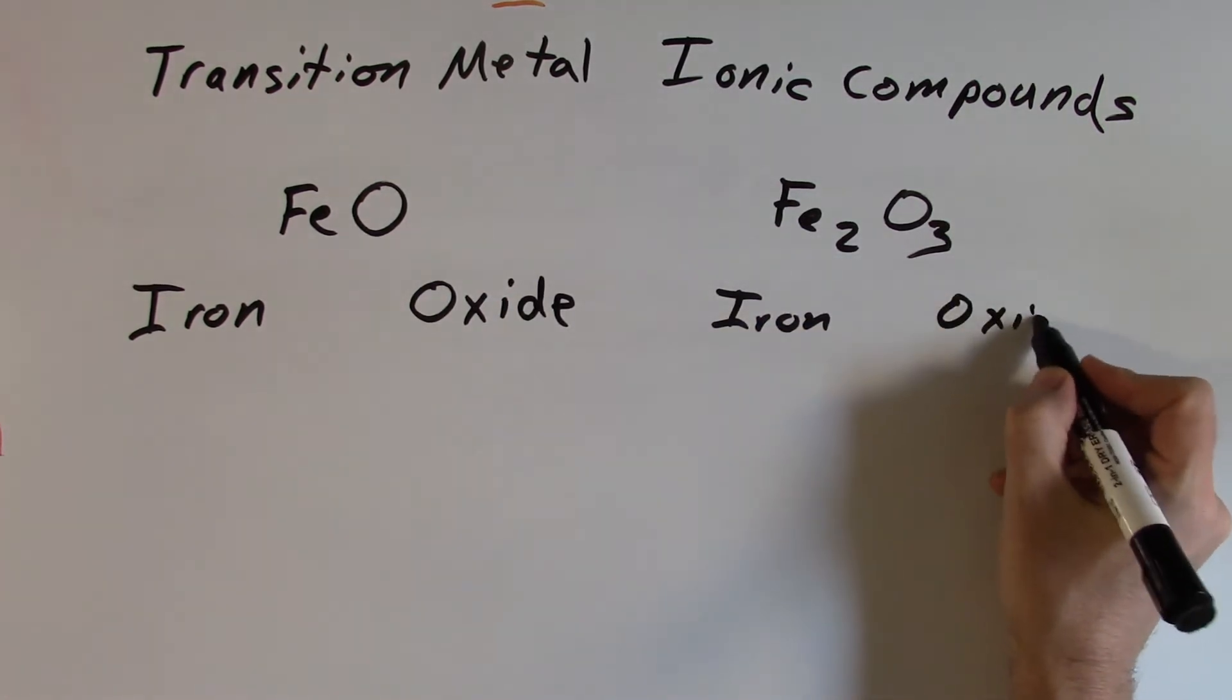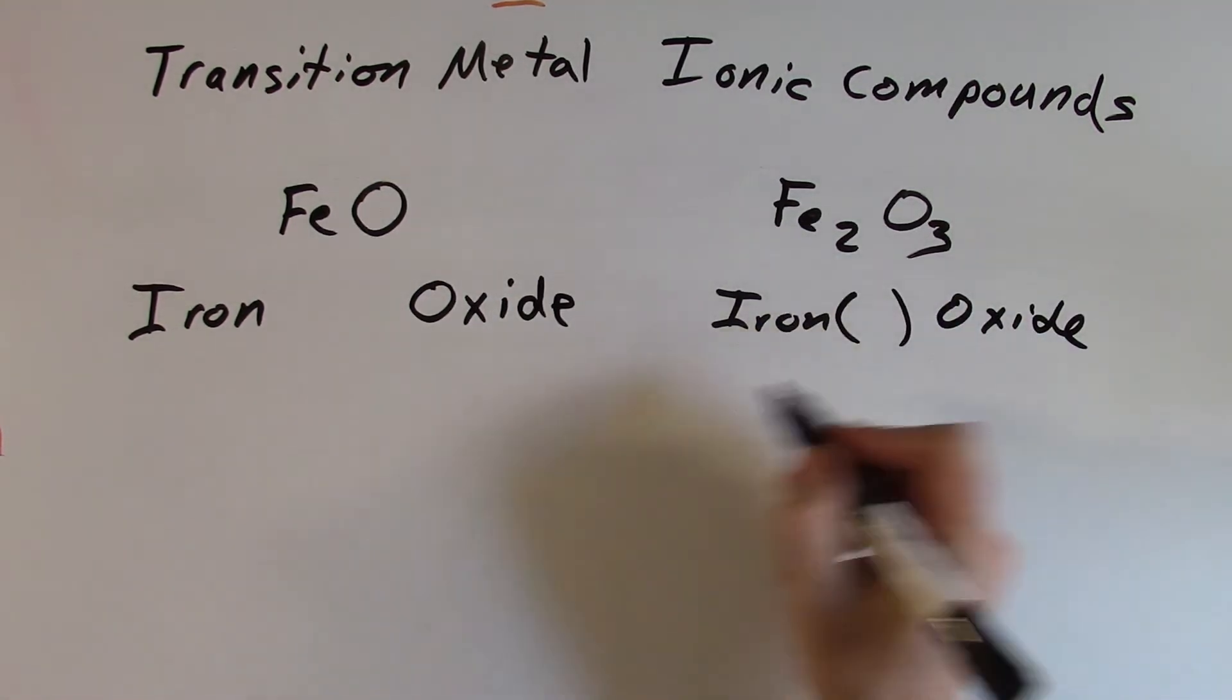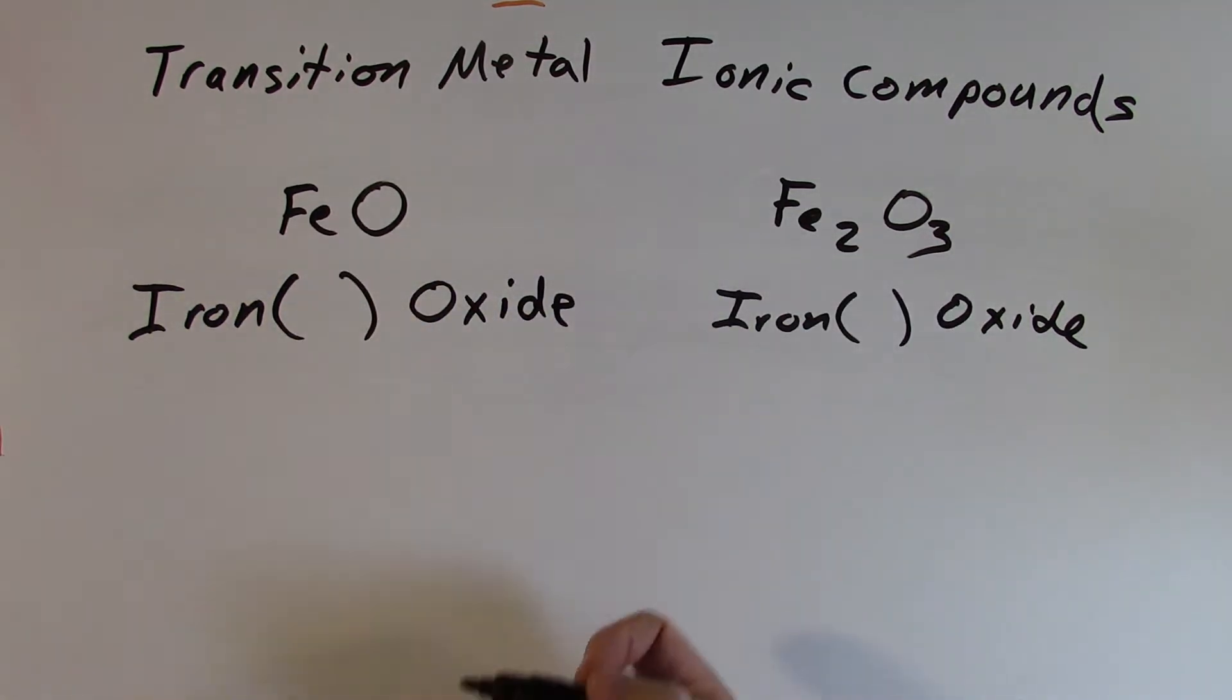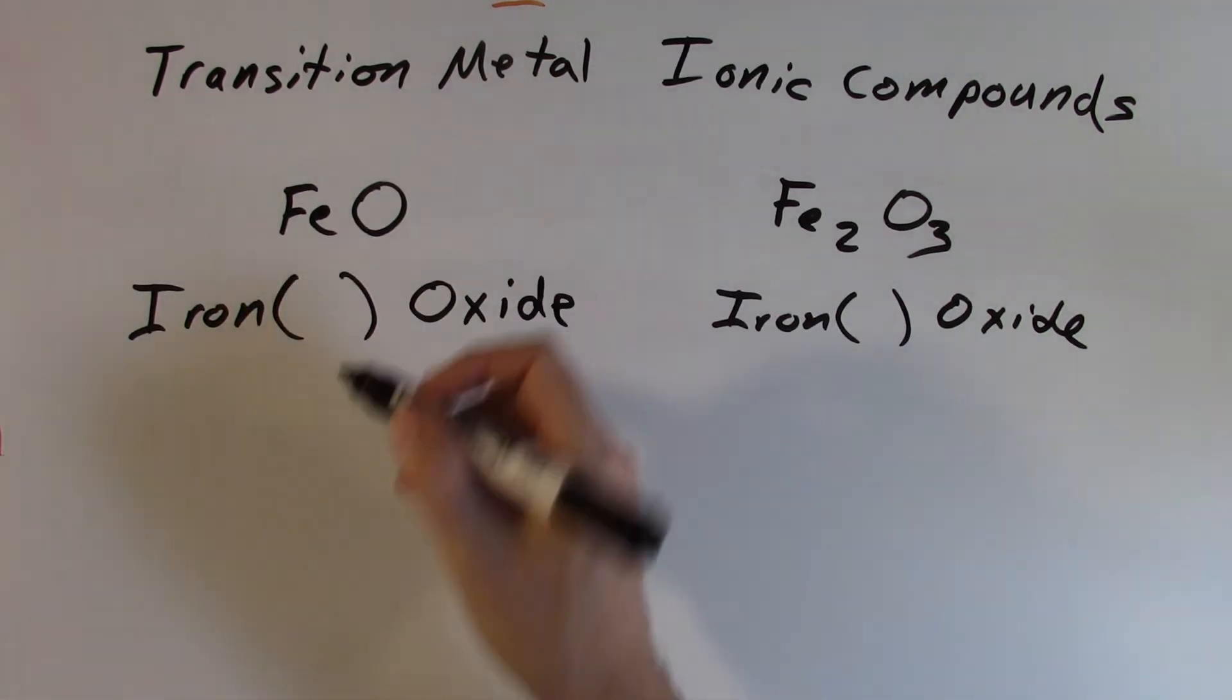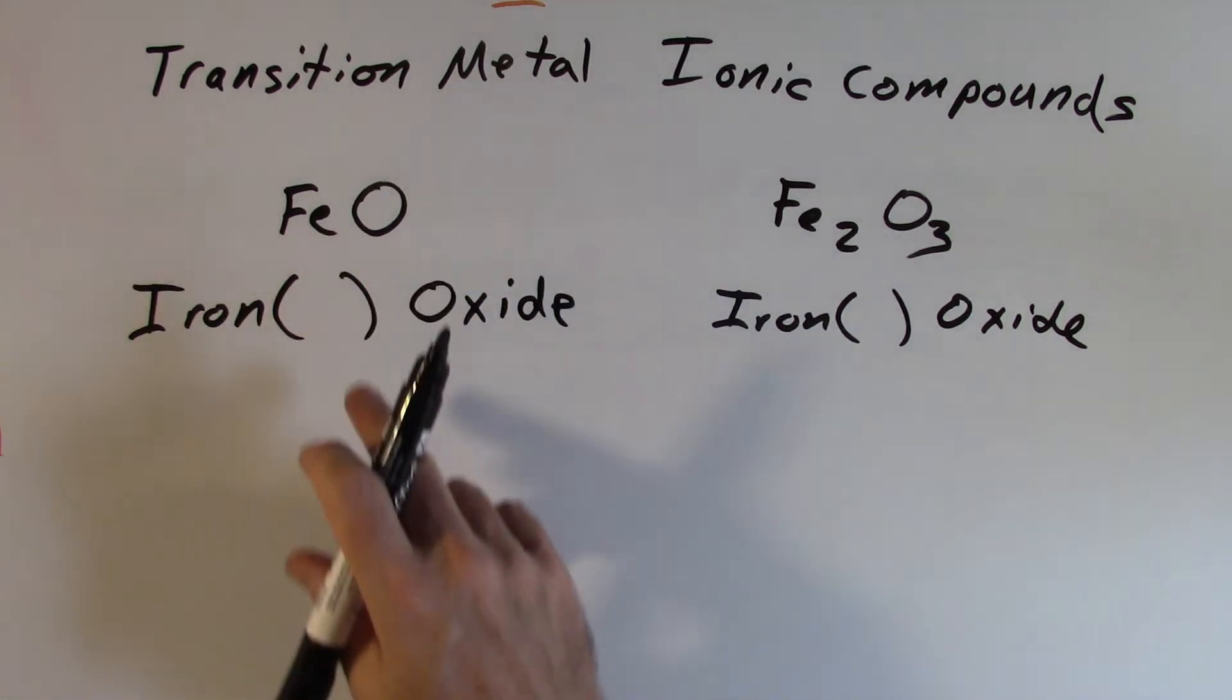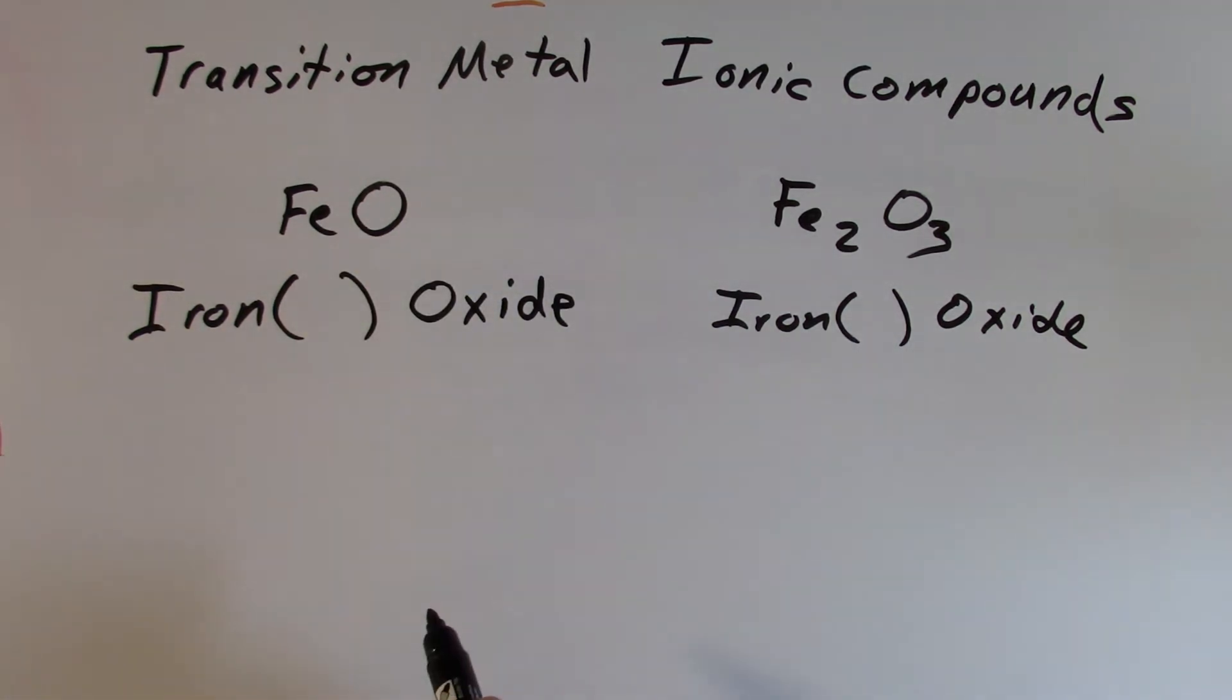I'll leave a little room there because both of these need a Roman numeral to tell what the charge is on each iron atom. So again, there's a little more work that we have to do with these. And so the more work is, we've got to figure out what that charge is. The formula doesn't explicitly tell us. But here's the neat thing. The transition elements are always going to be with another element or another ion where we do know what the charge is.